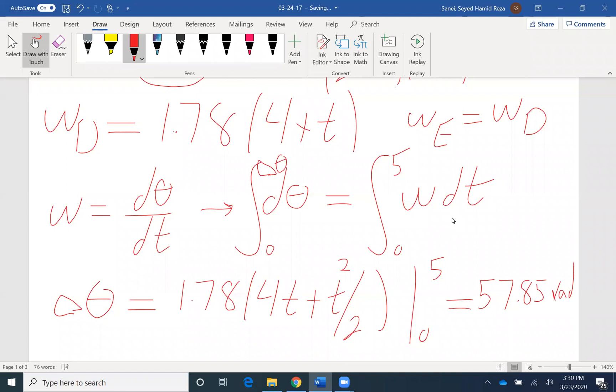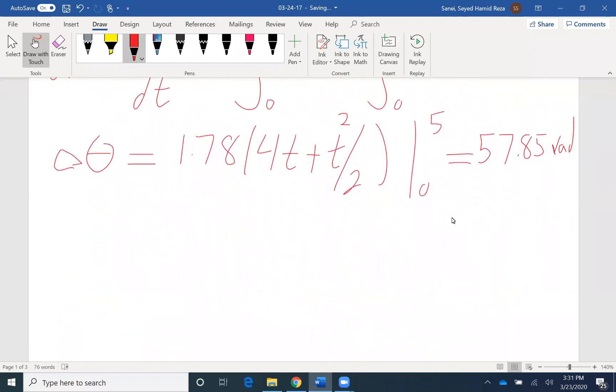And we need to remember the unit is radian. Now we find the angular displacement that the shaft E will experience after five seconds with the given angular velocity. We can write a relation between the linear displacement, dx, and angular displacement, d theta.